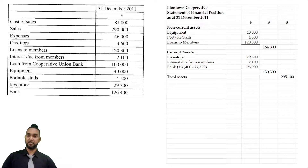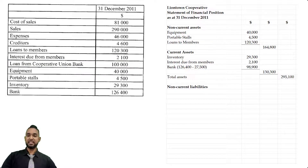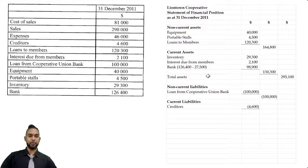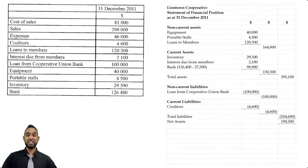Now we subtract liabilities. In keeping with permanence, we start with non-current liabilities. There is a loan from a cooperative union bank of $100,000 — unless otherwise stated, loans are non-current liabilities. For current liabilities, we only have one item: creditors. That gives total liabilities of $104,600, which is subtracted from total assets to give net assets of $190,500.